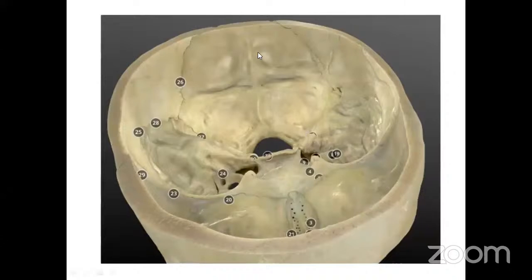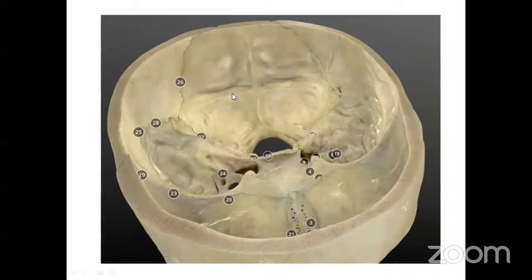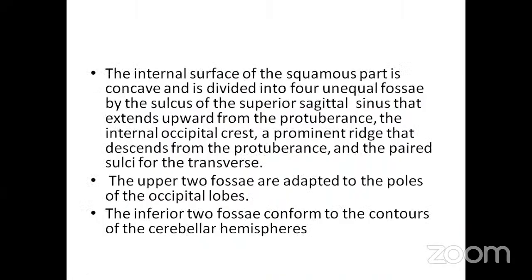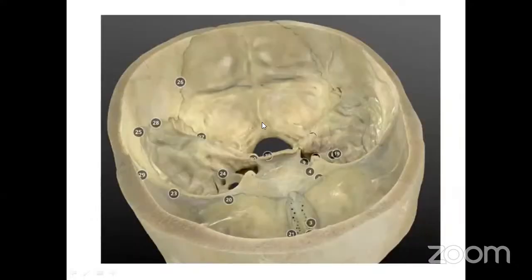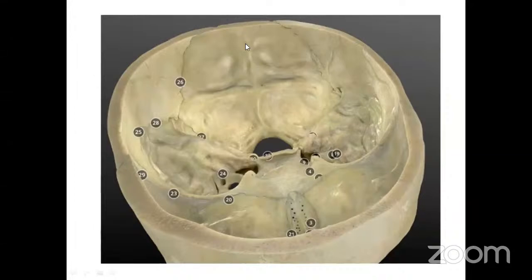Viewing the inside of the squamous occipital bone in 3D anatomy, we can see it is divided into four unequal fossae by a transverse ridge correlating with the transverse sinus, the superior sagittal sinus ridge, and the internal occipital crest. The upper two fossae accommodate the occipital poles, while the inferior two fossae conform to the contours of the cerebellar hemispheres.